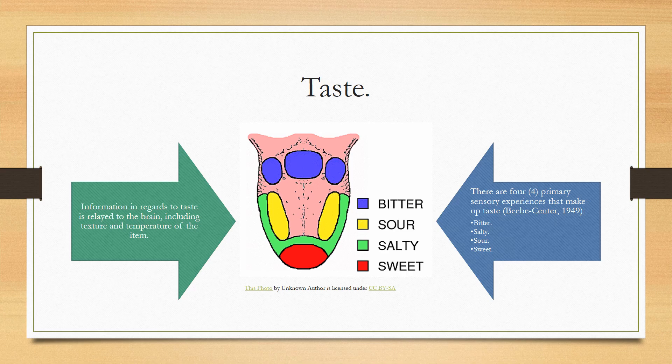Some people may have greater sensitivity to certain tastes than others — for example, you might taste bitter things more strongly than someone else, or be more sensitive to salty flavors. A lot of our sense of taste is also determined by our sense of smell.